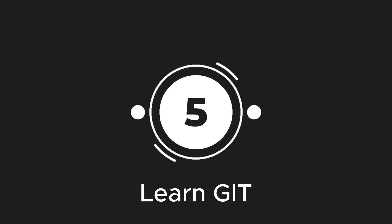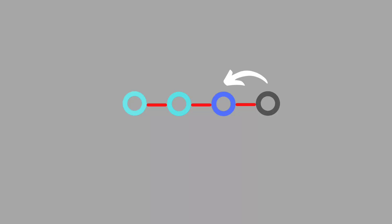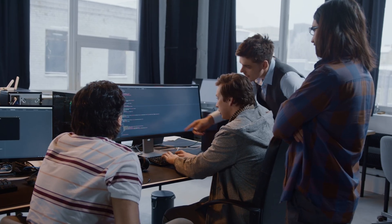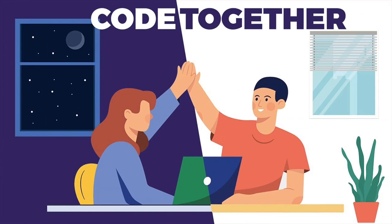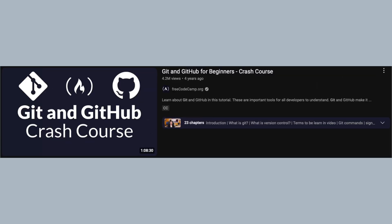Step 5: Learn Git. Git is a version control system that lets you keep track of every change you make in your project. If you break something, you can easily roll back to a previous version. It also makes it easier to collaborate with other developers, manage different contributions, and avoid conflicts when multiple people are working on the same codebase. Git is widely used in the industry, so mastering it early will put you in a great position. I recommend the Git tutorial from FreeCodeCamp — it teaches you everything you need to get started.